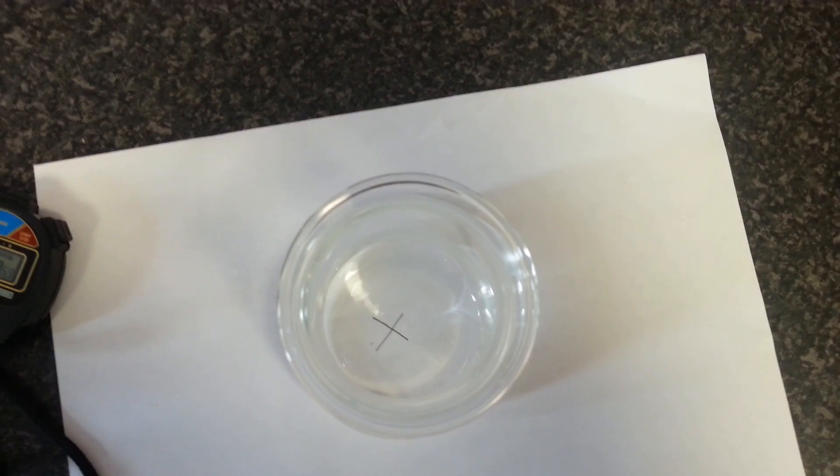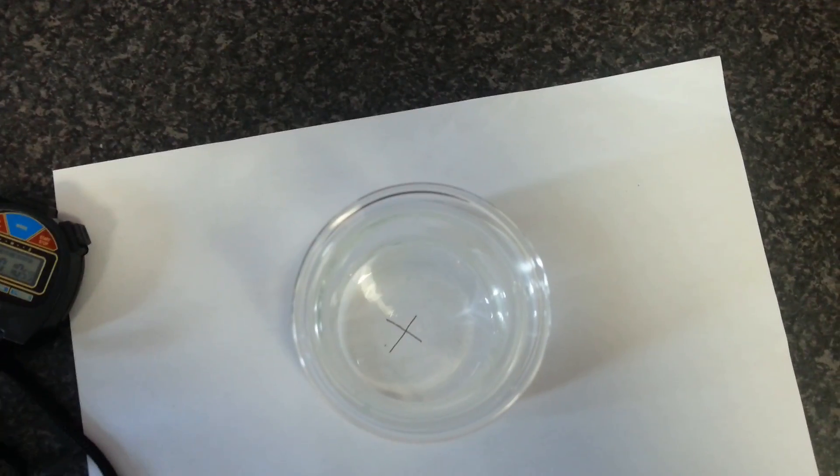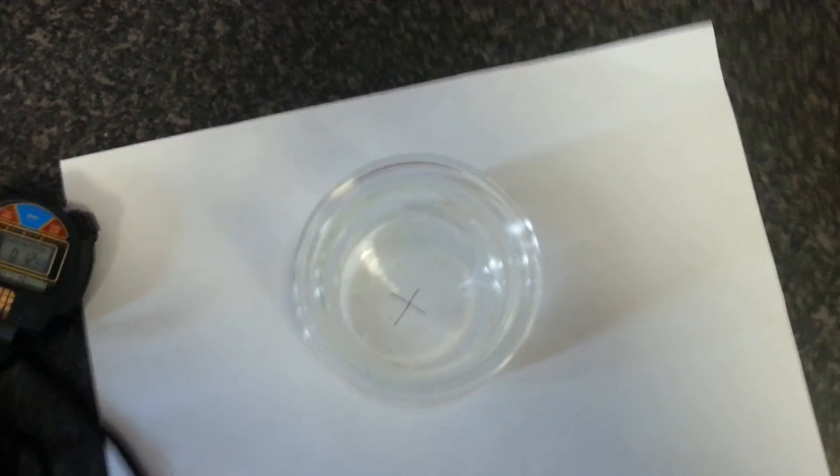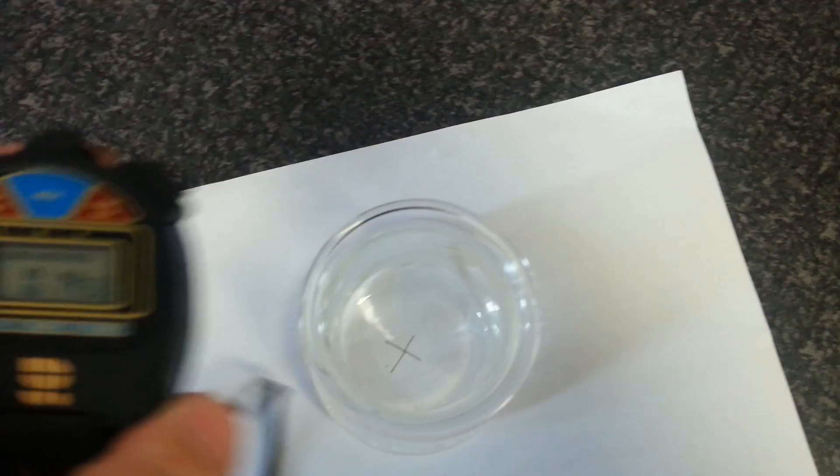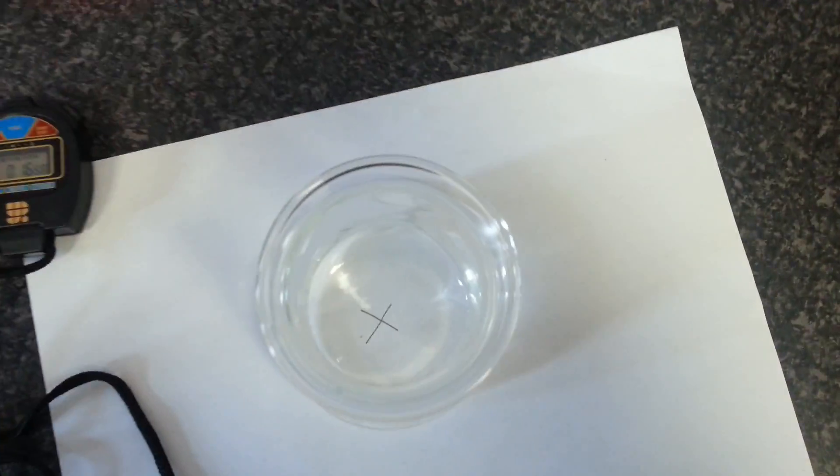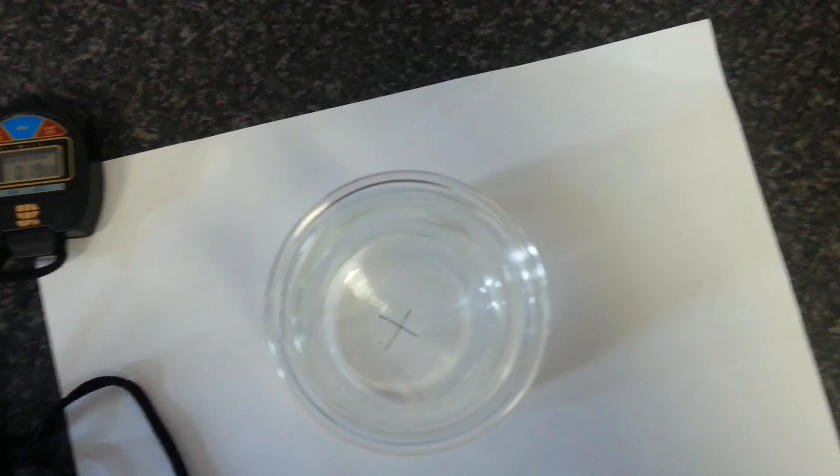Then when you read it, you're going to have a look from the top and keep checking to see when the cross magically disappears. You're going to record the time it takes for the cross to disappear. Then record this time as your time of the reaction. Good luck guys.